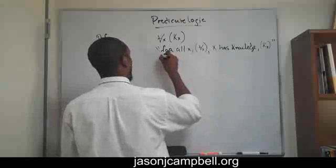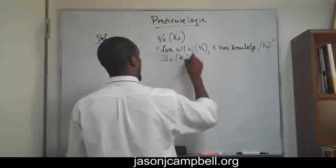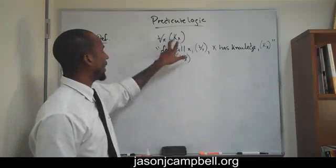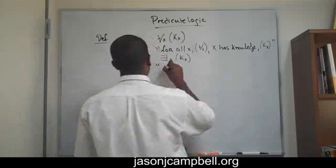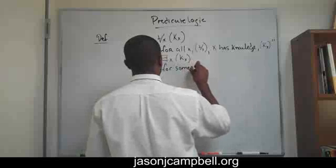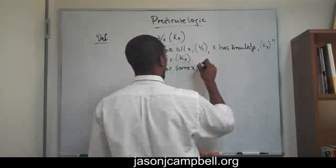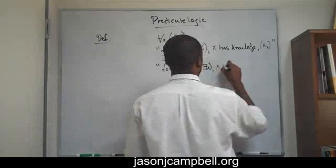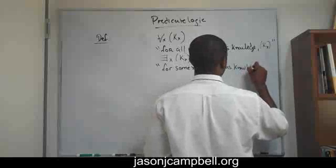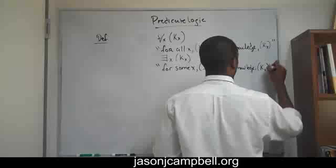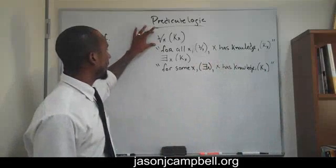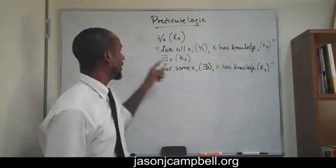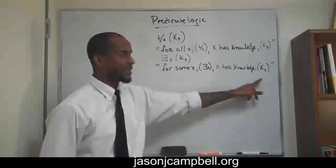How is this read? Well, you know, take a shot at what you think, how do you think that would be read? We see that this part's the same, so it should be the same, it's just different. This would be, for some x, which is represented by this. For some x, which is represented by this, x has knowledge, which is represented by this. So, this symbol, this structure means for all x, x has knowledge. This means for some x, x has knowledge. Pretty simple.